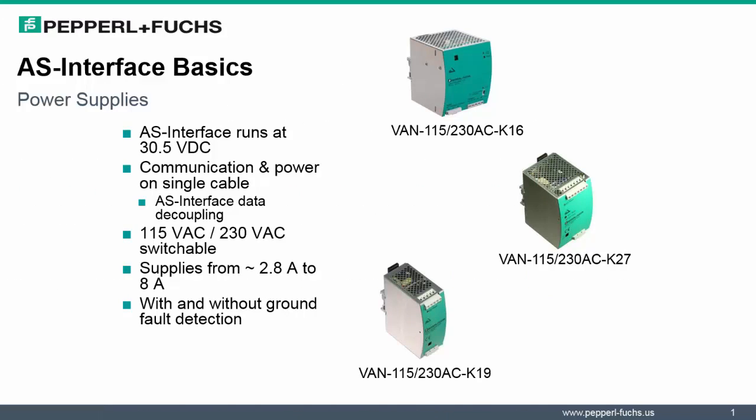AS Interface power supplies are very important in the network. These power supplies are unique because they have data decoupling built in them. Data decoupling is a very important aspect of an AS Interface power supply because communication and power now could be transferred on the single cable. The maximum current capacity of AS Interface power supplies ranges from 2.8 amps to 8 amps. AS Interface power supplies have a really nice feature in that they have short circuit and overload protection when limits are exceeded.